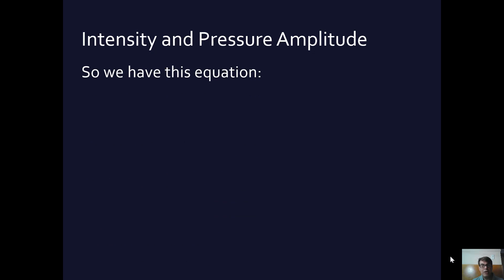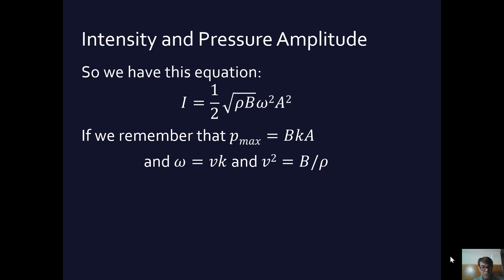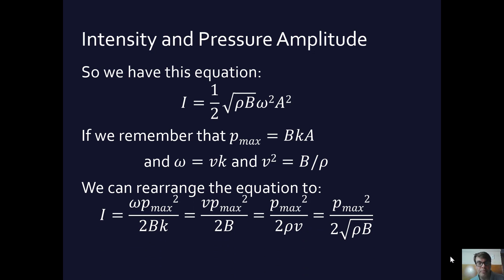Okay. So how do we find the relationship between the intensity and the pressure amplitude? Well, we have this equation from the previous slide, right? Well, if we remember that the maximum pressure, that is the pressure amplitude, equals the bulk modulus times the constant k times the amplitude, and we use these other two equations I just mentioned, omega equals velocity times k, and the velocity squared equals the bulk modulus over ρ. So we can shuffle around, and we end up with basically a whole bunch of different variations on the pressure amplitude, the relationship between intensity and pressure amplitude.